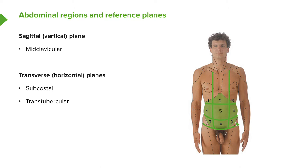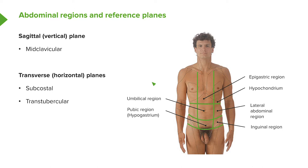These regions are really important because deep to specific regions we have certain organs. So if pain is radiating in one of these regions, you have a good idea of which organ lies beneath it. In the midline we have what's known as the epigastric region, then by the umbilicus we have the umbilical region, and inferior to that we find the pubic region. Lateral to these, on either side, we have left and right versions.